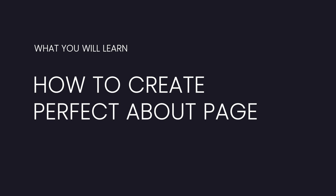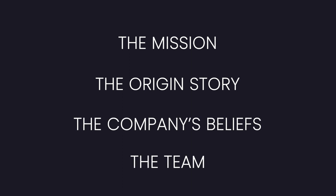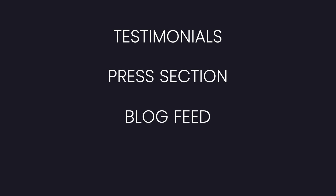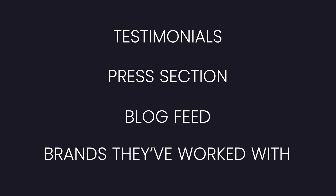For the about page, with most websites they have the generic stuff like the mission, the origin story of the company, maybe some of the company's beliefs, and the team. But I've also seen a lot of other about pages that mix in sections that could be placed on other pages as well — things like testimonials, a press section, a blog feed, or brands they've worked with. So it really just comes down to what is important for your users to know. We're going to cover a lot of those bases in this video, so let's get started.